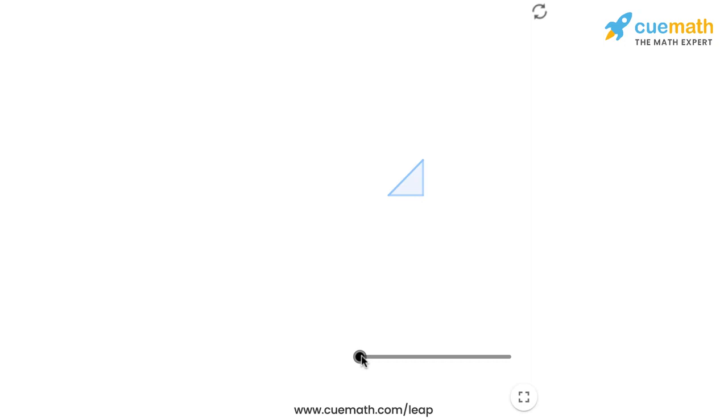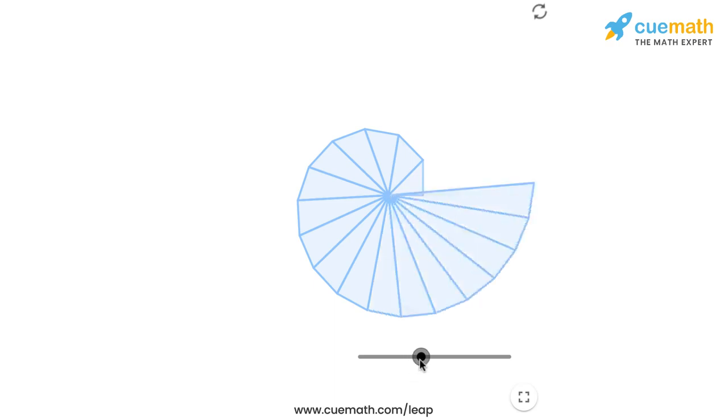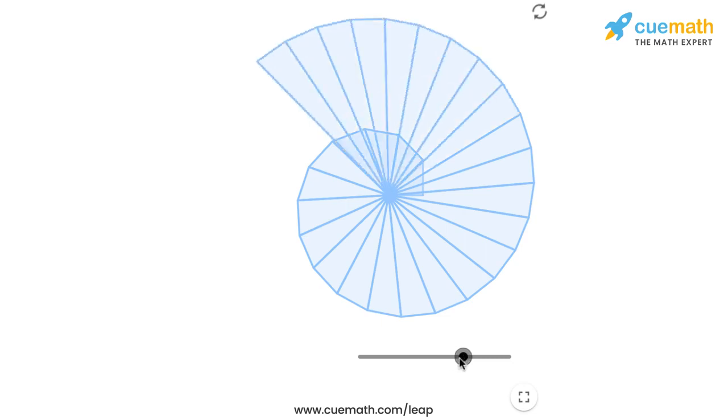Here's the simulation as I drag the slider. The simulation plots the square root spiral for more and more values of natural numbers. Notice how beautiful the pattern looks. I'm sure you might have seen similar patterns in nature. Try and find out if this spiral actually exists in some form in nature.